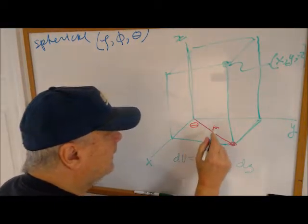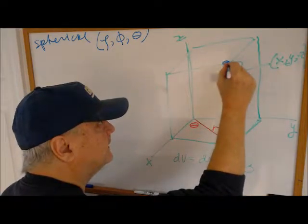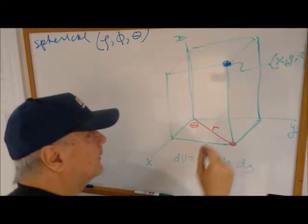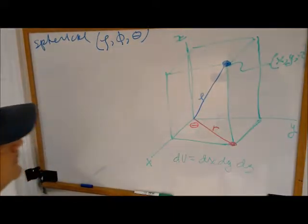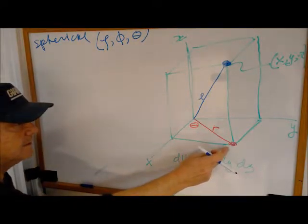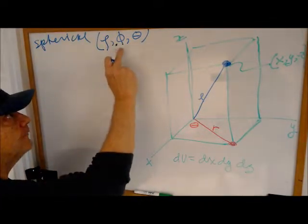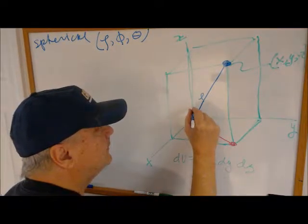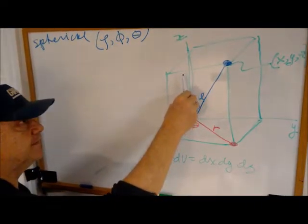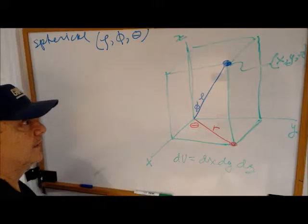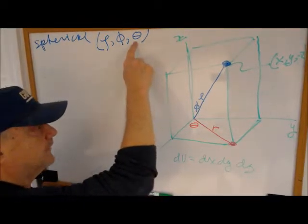We're going to use the same r and θ, but this time, to identify the point in space, we're going to use the distance from the origin. That's what we mean by rho. R is very similar to r. R is in the xy plane, rho is in space. We need angle phi. That angle is right here. It's the angle from the positive z axis. And θ is just this θ here.